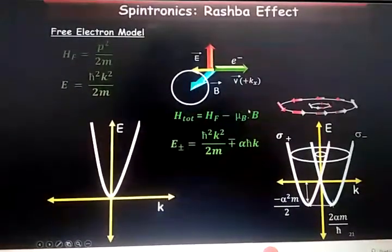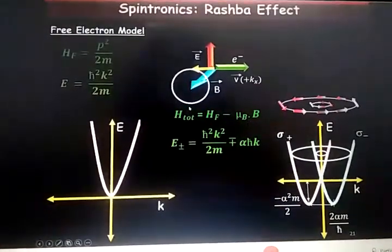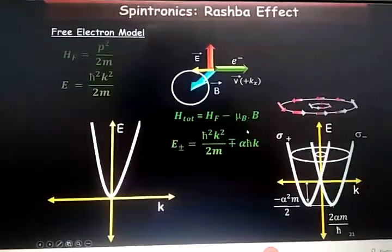This is the magnetic energy. And if you solve this Hamiltonian, you can obtain the energy eigenvalues of the system.